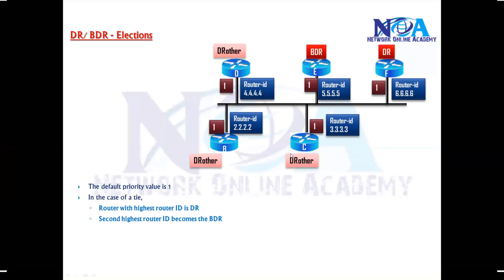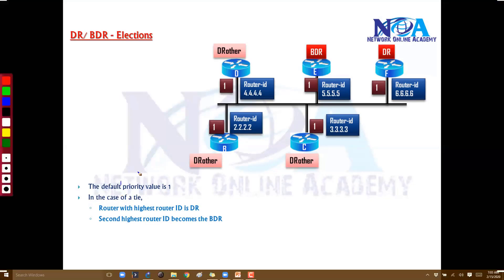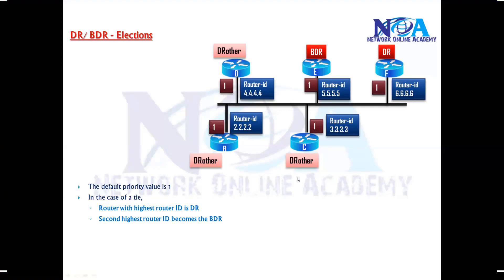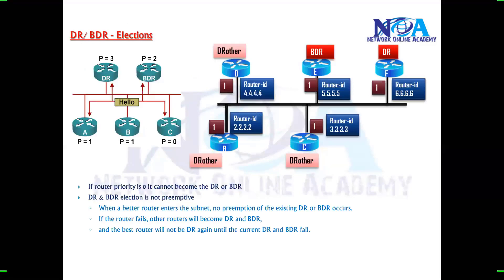To summarize: DR/BDR elections are done based on priority value first. If there is a tie, the router ID is used as the tiebreaker. We can also change priority values in the configuration section depending on requirements. If going with default values, the router ID will be the tiebreaker.